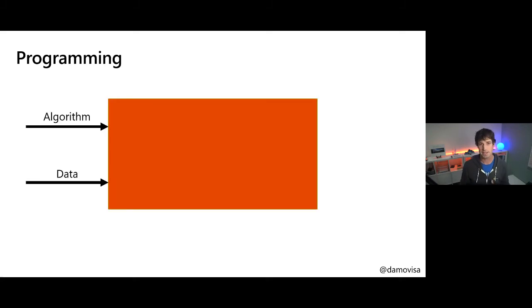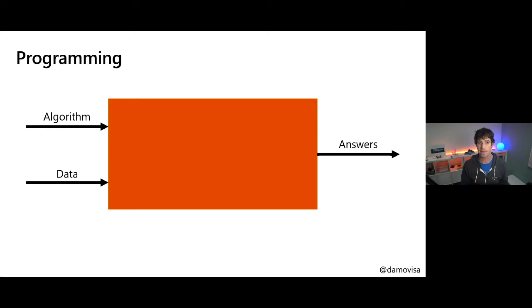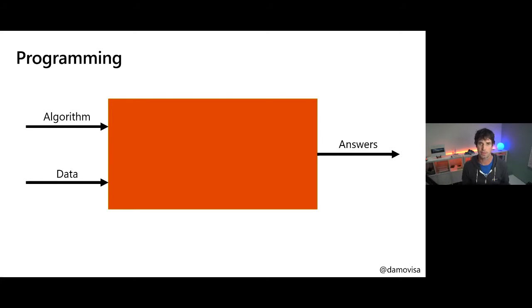Let's talk about what machine learning actually is. Traditional programming: I understand the problem, I write an algorithm to solve that problem, I give that algorithm some data, and I get an answer at the other end. This is good for problems where you understand how to solve them. For example, if I'm asked to write a function that tells me how much tax is applicable for a particular transaction — I look up tax tables, look at what type of transaction it is, whether GST is applicable. I'd know how that algorithm looks: the if statements, the loops. I'd write that code, feed in some details about the transaction, and that function returns an answer.